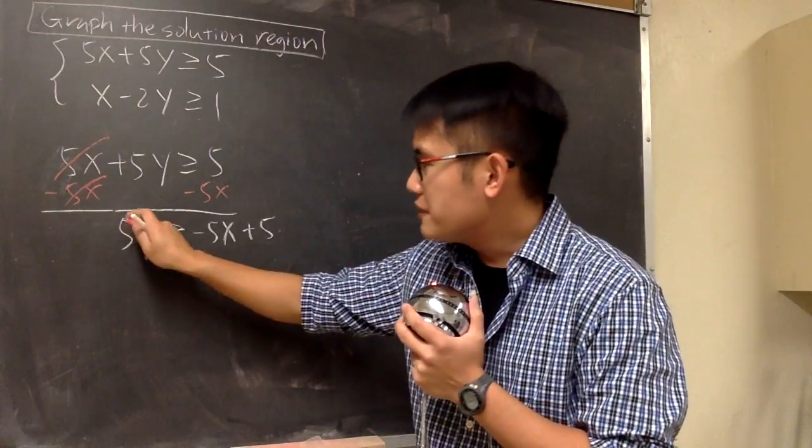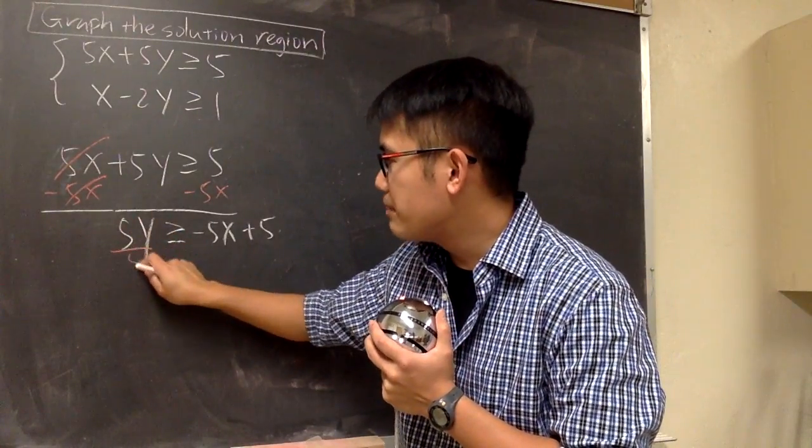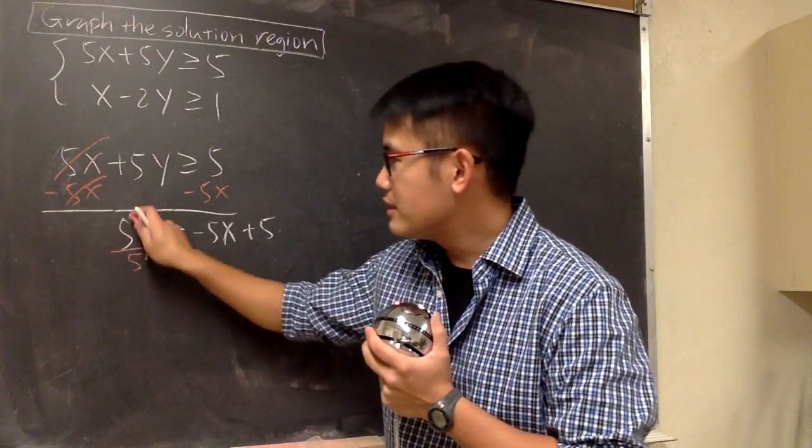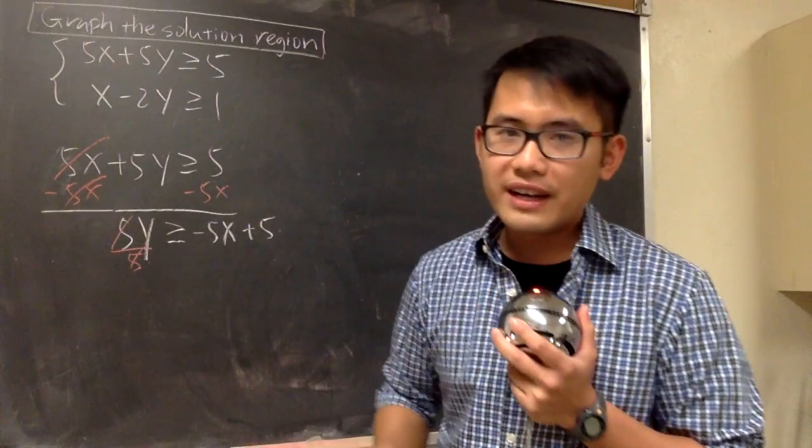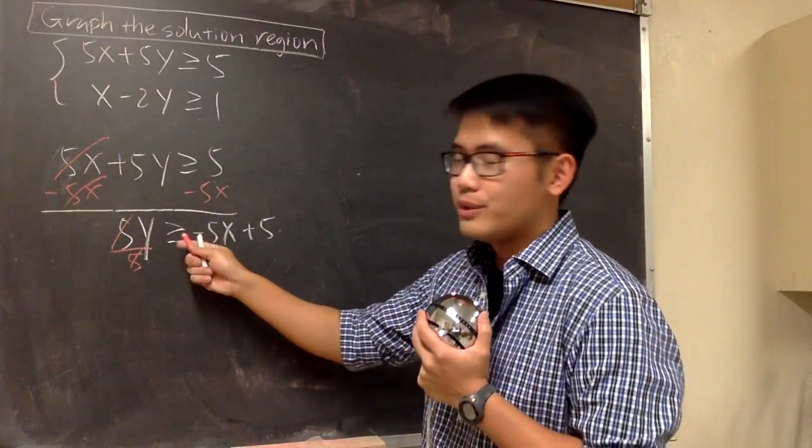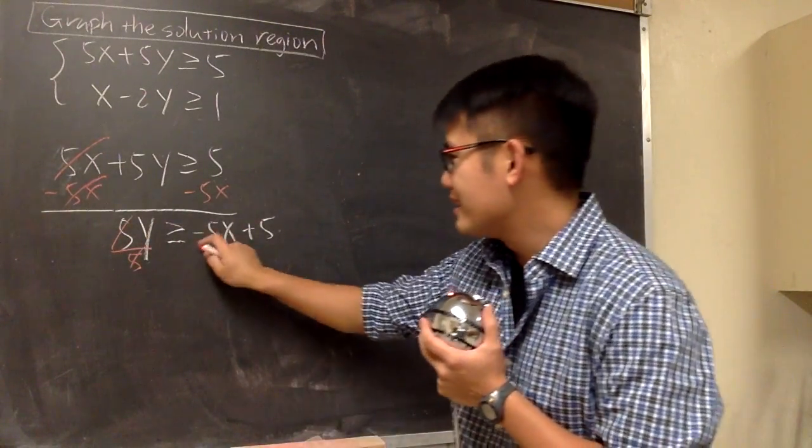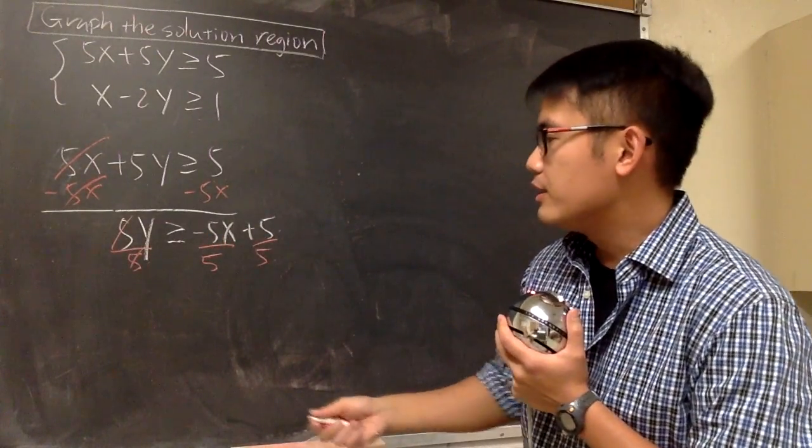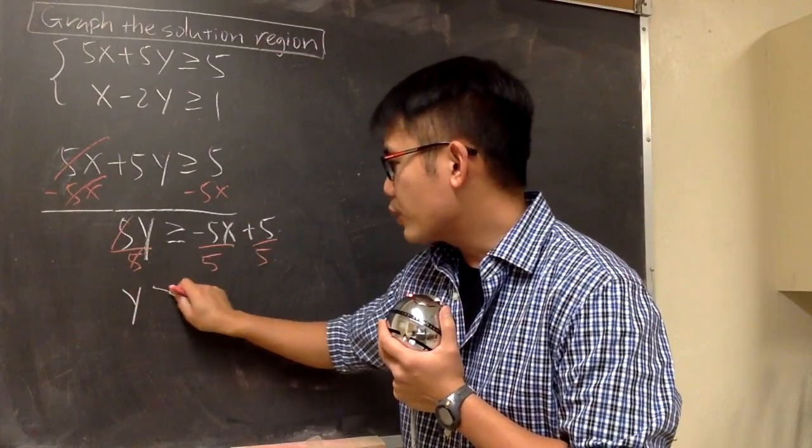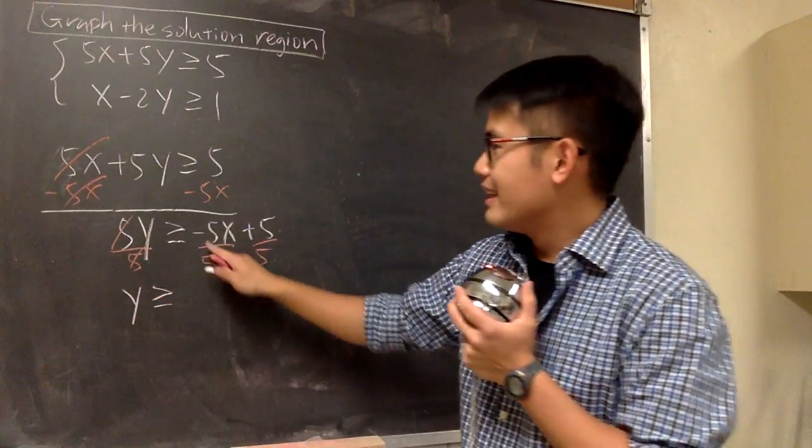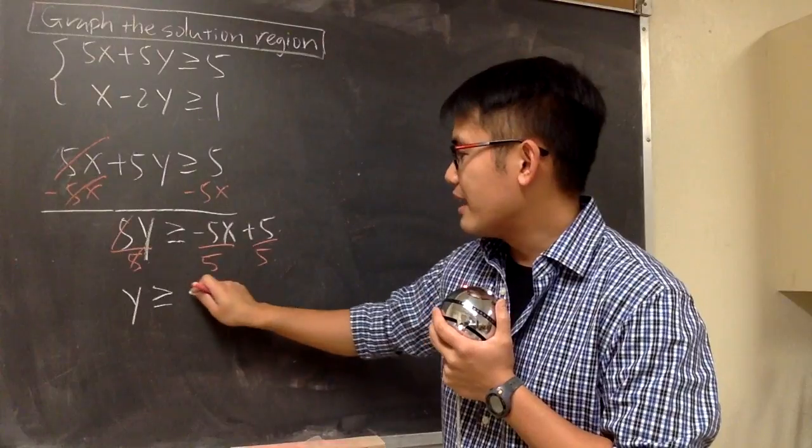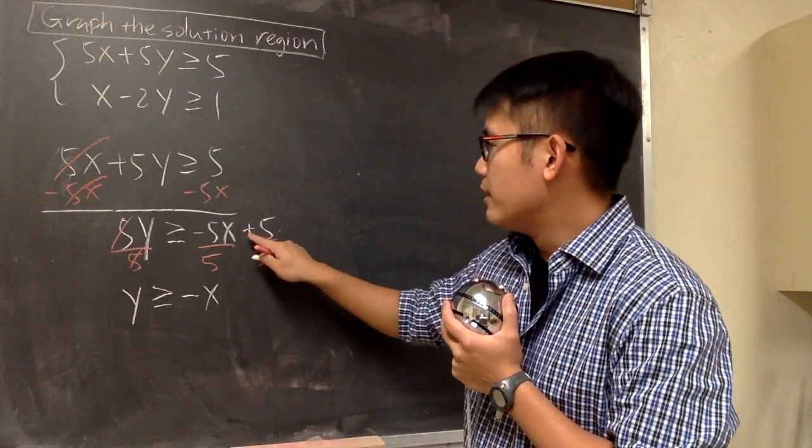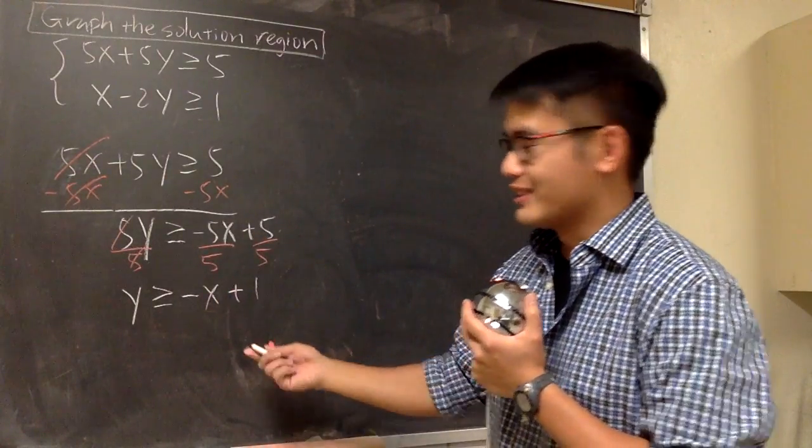And then, this is 5 times y, so we are going to divide it by 5. This is just a positive 5 that we are dividing, so we don't need to switch the inequality symbol. Divide everything by 5, and the y will be by itself. This is still greater than or equal to negative 5x divided by 5, that's negative x, and 5 over 5 is plus 1.